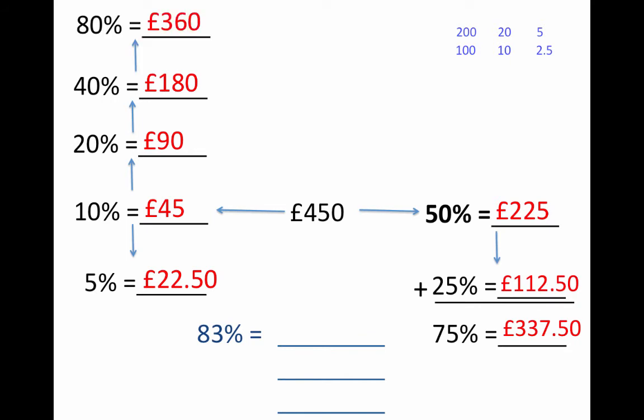Now I can see there's no two individual answers that add together to make 83% at the moment. So this is where 1% comes in. Find 1% by dividing by 100. That will give the answer £4.50. If I know 1%, I can find any percentage I want.